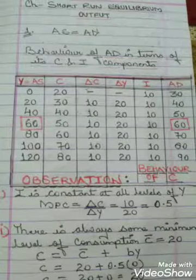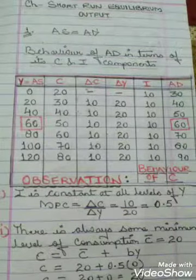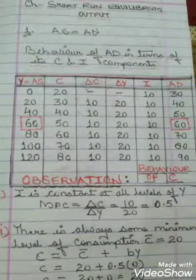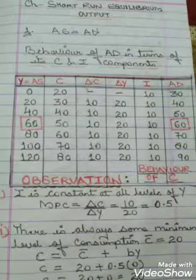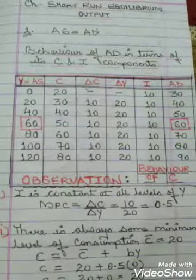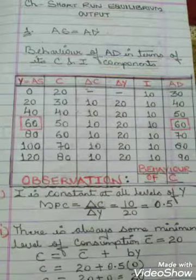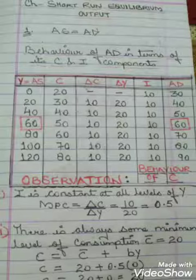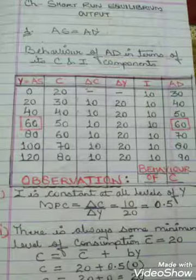Now let's understand the behavior of AD in terms of its components, that is C and I. I have drawn a table which has six columns. The first column is Y which equals AS — aggregate supply — since income comes from supply. Then we have C for consumption, delta C for change in consumption, delta Y for change in income, I for investment expenditure, and AD for aggregate demand.